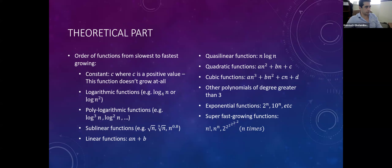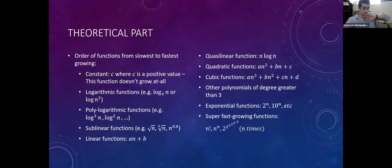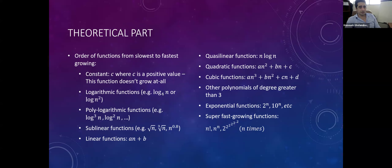I've put together a brief list of functions from the slowest growing to the fastest growing. If you understand and memorize all of them, you probably don't need anything else to compare two given functions in terms of their growth rate and big O notation. This list would be good enough for 99% of cases.